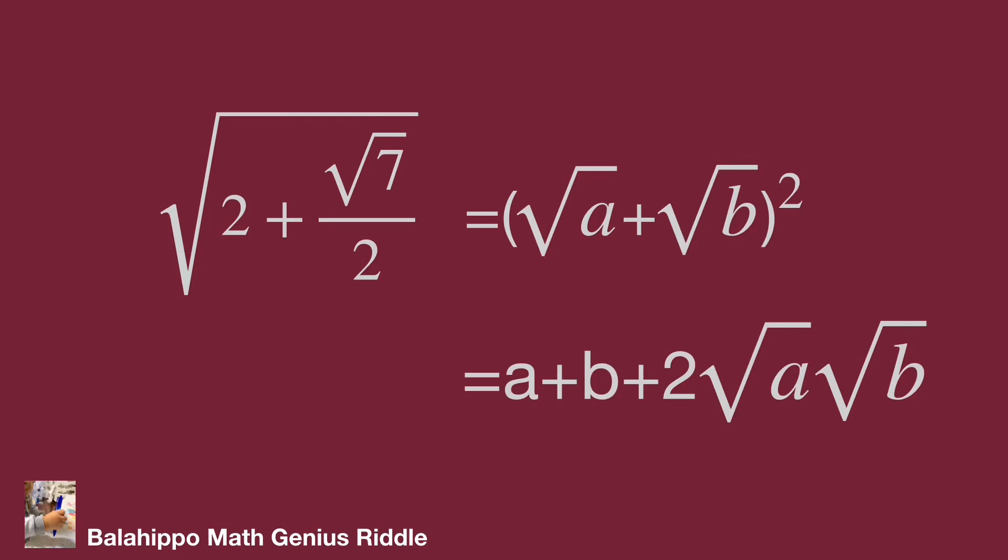Compare this item to the given information. a plus b will equal to the items without square root, and the square root items 2 times square root of a times square root of b may equal to square root of 7 over 2.